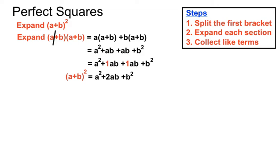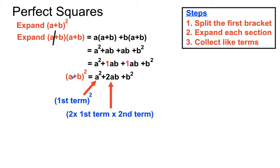So we have a plus b squared equals a squared plus two lots of ab plus b squared. We can take that pattern and make a general principle: the first term squared, plus two lots of the first term times the second term, plus the second term squared. That's the general rule we'll use as a shortcut.